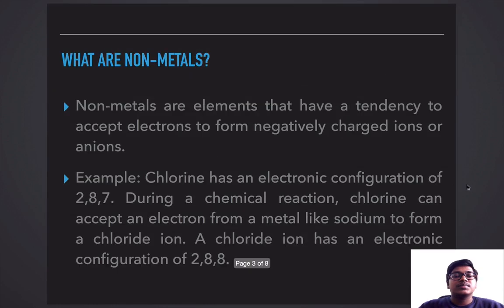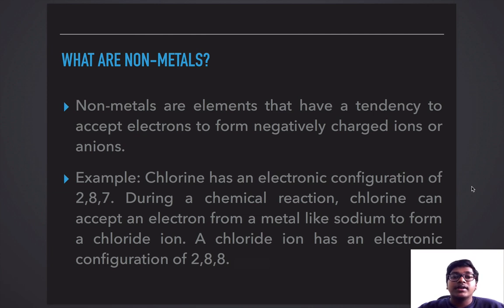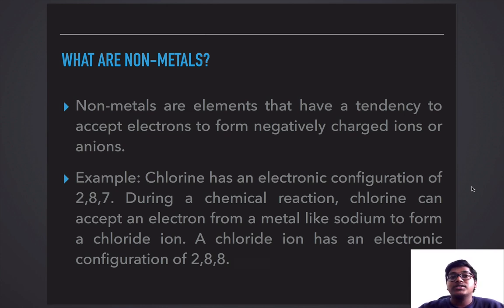Let's start. What are Non-Metals? Non-Metals are elements that have a tendency to form negatively charged ions, called anions. For example, chlorine — its electronic configuration is 2,8,7. In a chemical reaction, chlorine can accept an electron from a metal like sodium, and it will form a chloride ion, with a configuration of 2,8,8.